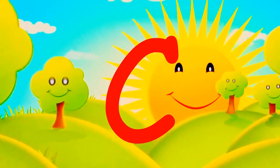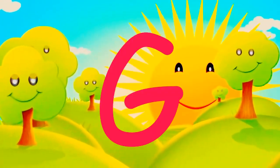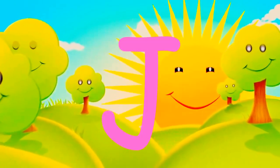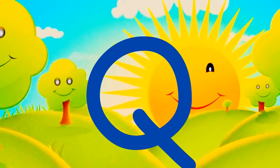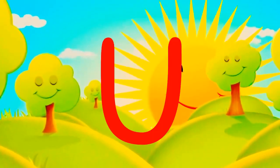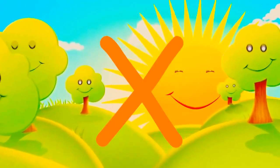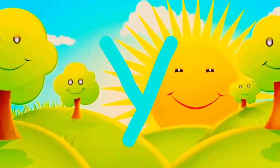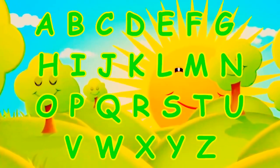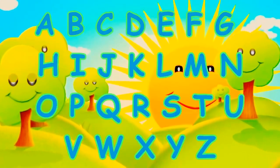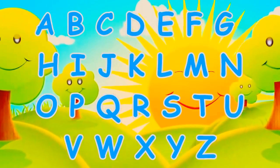A, B, C, D, E, F, G, H, I, J, K, L, M, N, O, P, Q, R, S, T, U, N, V, W, X, Y, and Z. Now I know my A, B, C, 26 letters from A to Z.